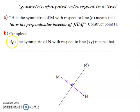Part B: R symmetric of N with respect to line XY. So line XY is the perpendicular bisector for segment NR.